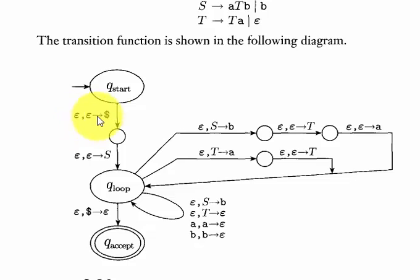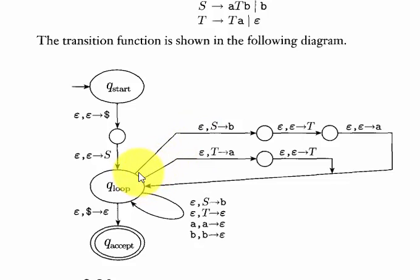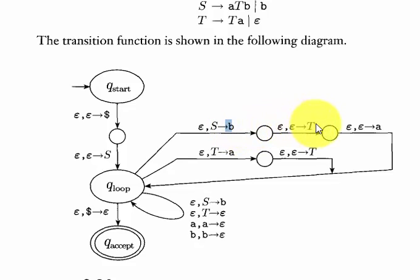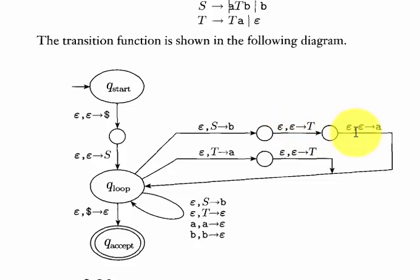So we've completed step one — we push the stack symbol — then we push the start symbol S. At the q_loop state, notice it's a loop; we just go back to the same state. We first replace the start symbol with B. When we encounter epsilon — no input — we replace the start symbol with the rightmost symbol in the production, then push the remaining symbols from right to left: B, then T, then A. For T, we replace T with A, then push T.